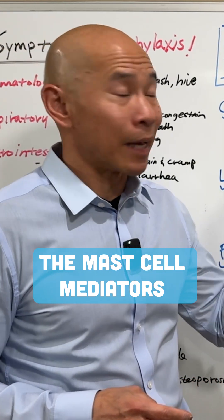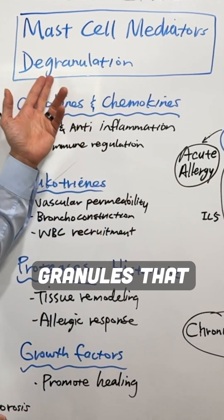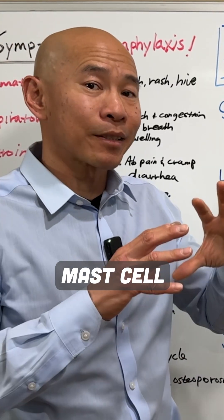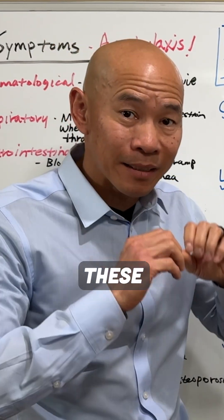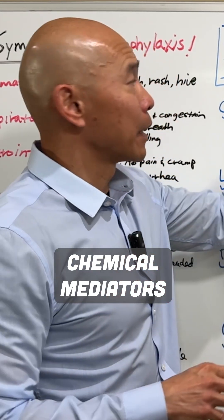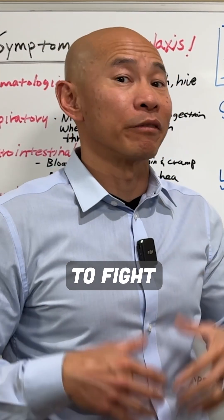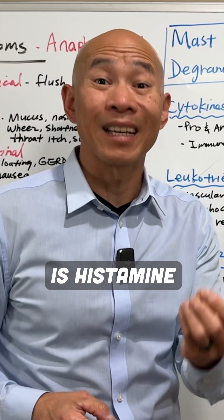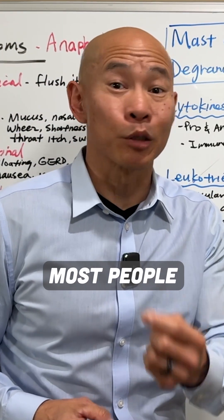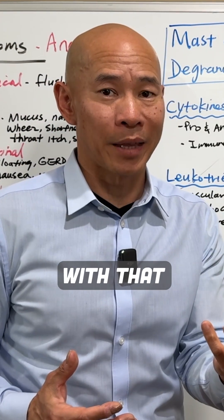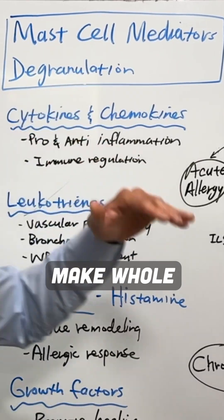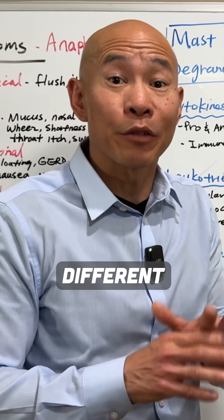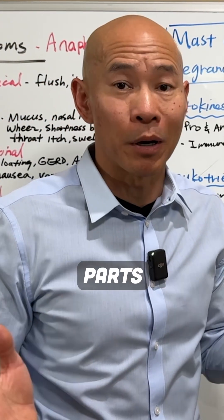The mast cell mediators — these are the granules that we talked about earlier. Mast cells degranulate to release these chemical mediators to help you fight an infection or allergen. The most famous of these mediators is histamine, which most people are familiar with. But the reality is that mast cells make a whole bunch of different chemicals and mediators, and they have different effects on different parts of the body.